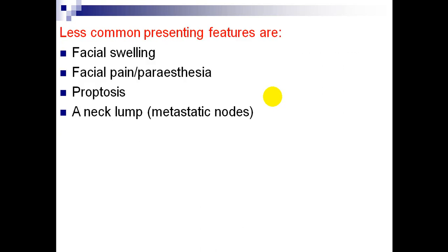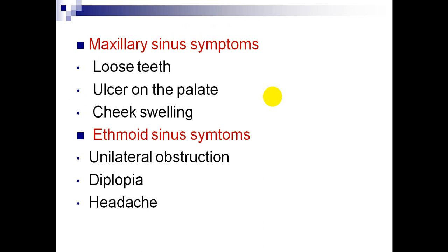Less common presenting features are facial swelling, facial pain or paresthesia, proptosis, and neck lymph node metastases. Maxillary sinus tumor symptoms are loose teeth, ulcer on the palate, and cheek swelling, while ethmoid sinus tumor symptoms are unilateral nasal obstruction, diplopia, and headache.